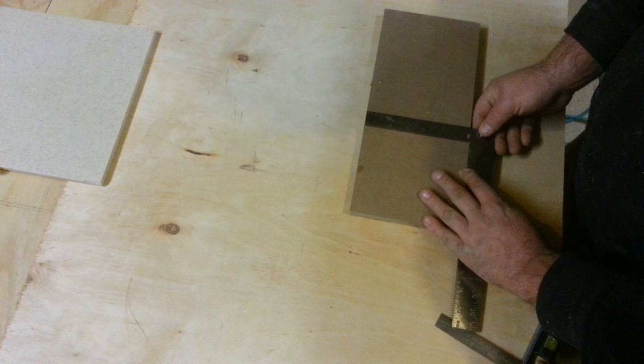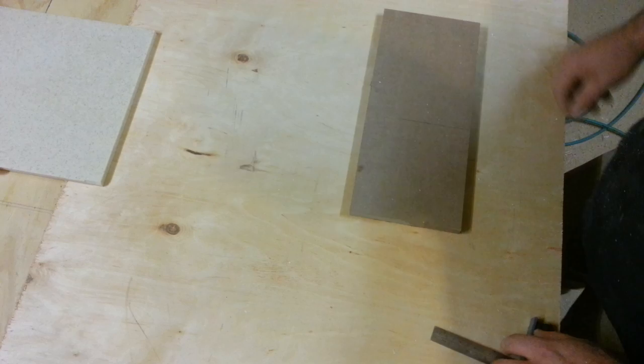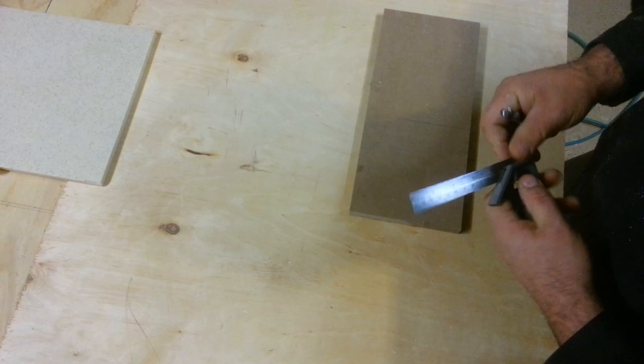Now you can do that with every square you have in your shop. For instance, I've got this small framing square here I use occasionally when I'm building boxes. And this one is not quite square. So that's the end of that one.